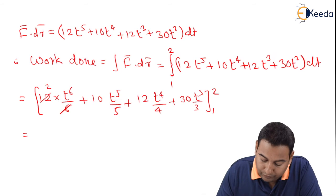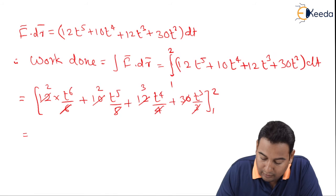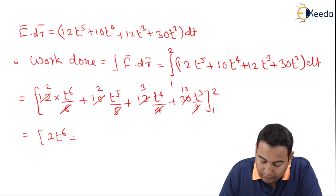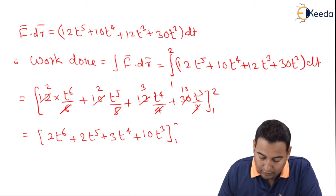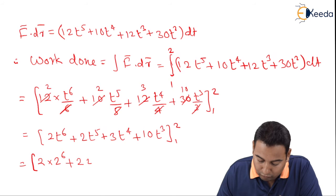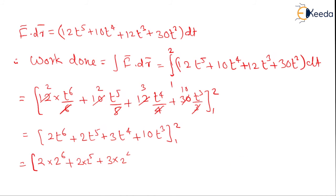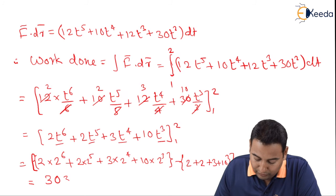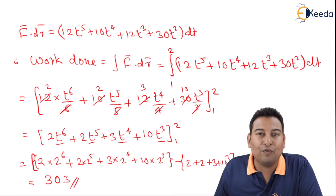This is actually 2, this is actually 2, this is also 2, this is 3, and this is 10, which is equal to 2t raised to 6, 2t raised to 5, 3t raised to 4, 10t cube. 2 into 2 raised to 6, upper limit I'm substituting, 2 raised to 5. If you replace 1, this will be 2 plus 2 plus 3 plus 10, simply because replacing 1 means all these terms are 1. If you simplify you will get the result, that is 303 is the required solution of work done in this problem. We converted the entire problem into t.